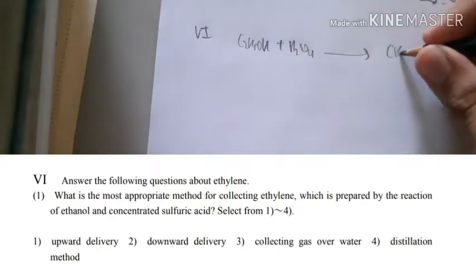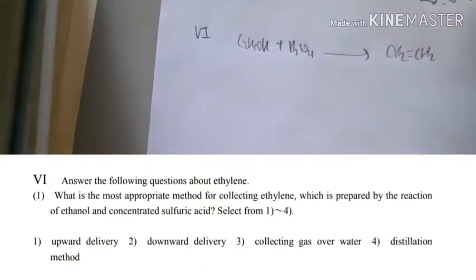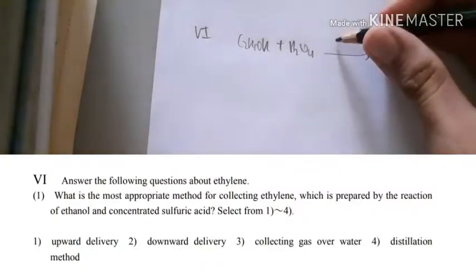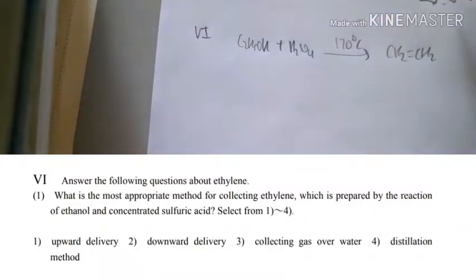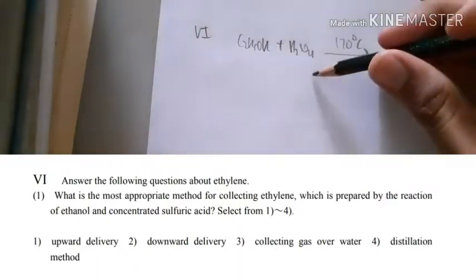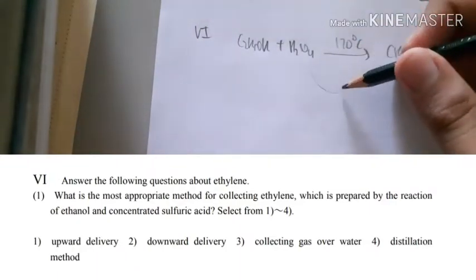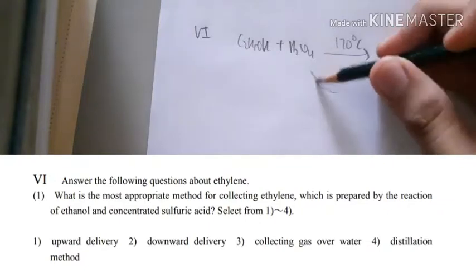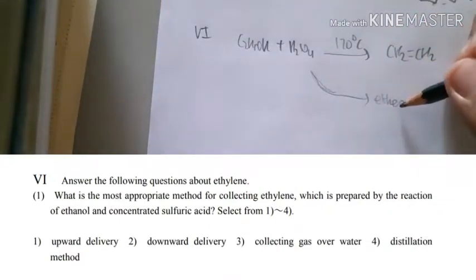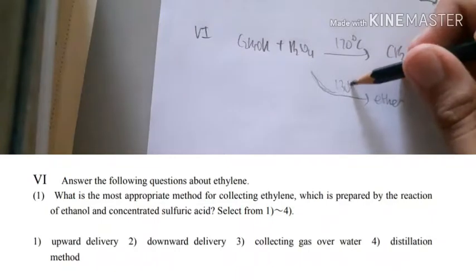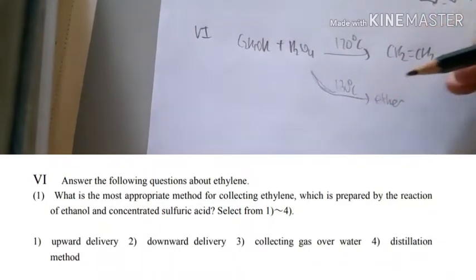Ethylene is basically ethene, just various names. It will only happen at high temperature, 170 degrees. At low temperature, 130 degrees, this can become ether.